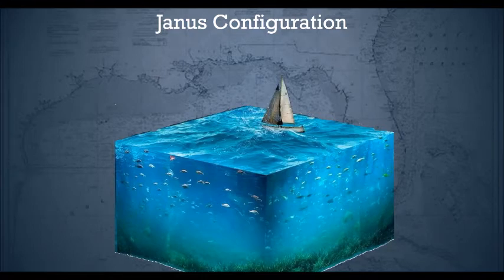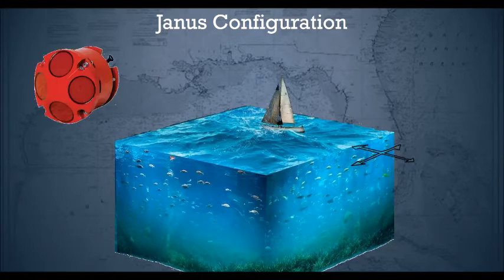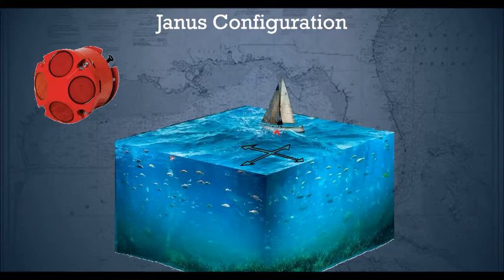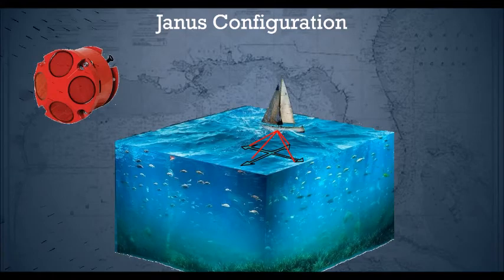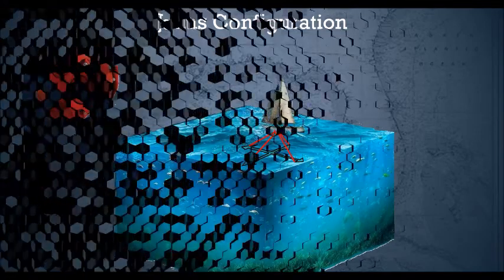Doppler uses something called Janus configuration, which involves beams sent out in all four directions. This not only enables you to get forward speed, it also gives you athwartship speed and also a reading for port and starboard. It also cancels the effect of pitching.